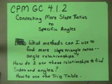Some big questions for today is what methods can I use to find more slope triangle ratios and angle relationships. How do I use these relationships to find sides and angles and how do I use the trig table?